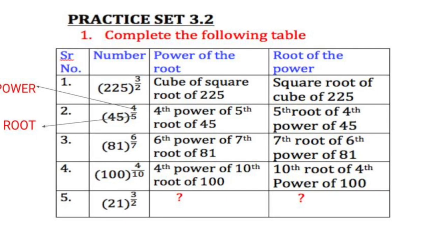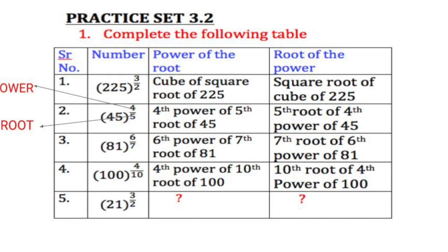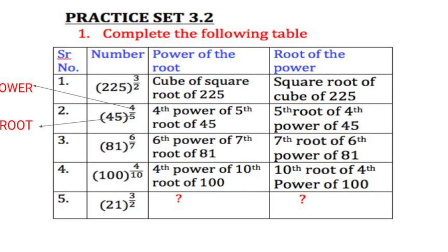The second sum 45 raised to 4 upon 5 is 4th power of 5th root of 45. And when you write it in root form it's 5th root of 4th power of 45.